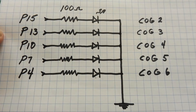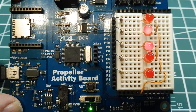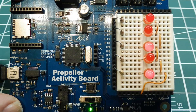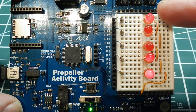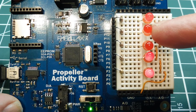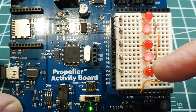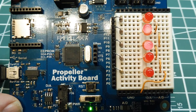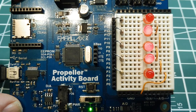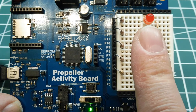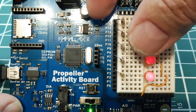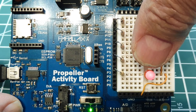We'll power up the circuit and have a look at the LEDs. The Propeller board is powered up with an LED blink program running. COG 2 is controlling the first LED, COG 3 the second, and then COG 4, 5, and 6. The first LED on COG 2 is running the fastest at around 100 milliseconds, and COG 6 is running the slowest at 1 second flash rate.